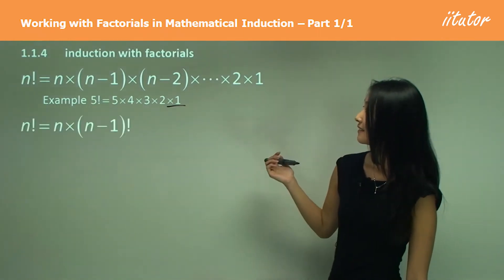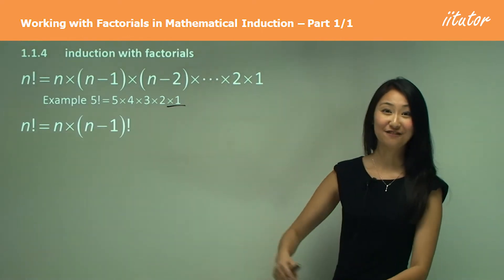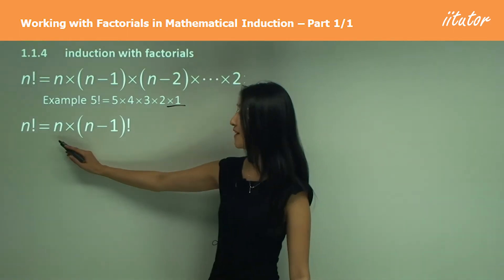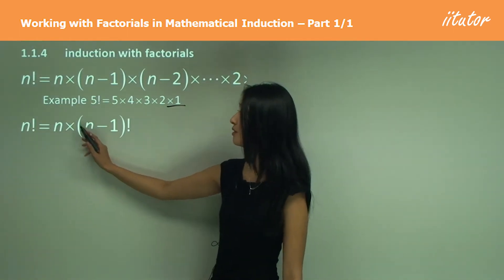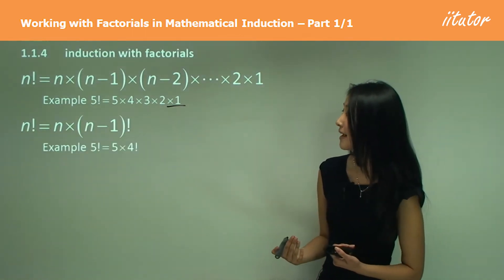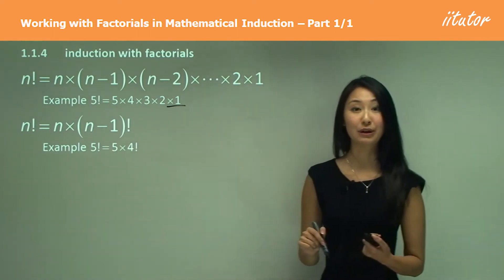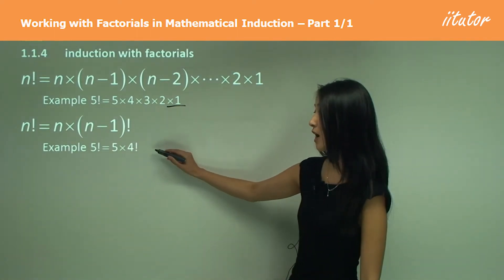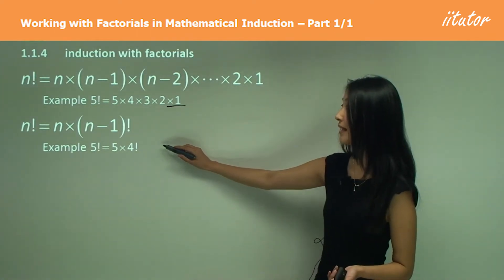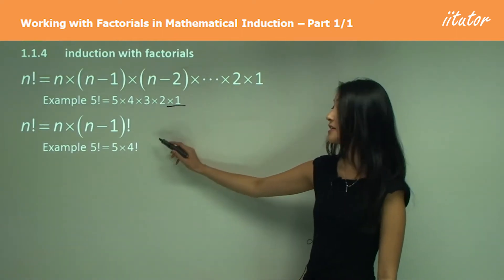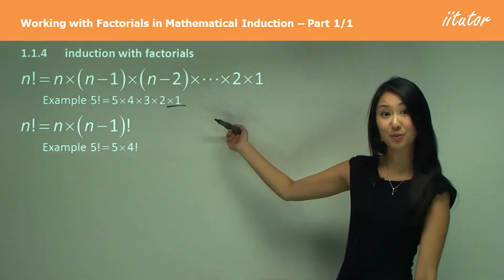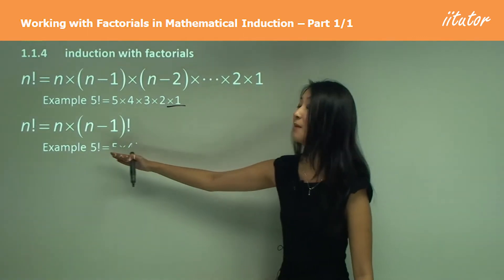Now this over here is very important for what we use in the induction process. We have that N factorial equals N times (N−1) factorial. What does that mean? Well, 5 factorial is actually the same as saying 5 times 4 factorial, and that makes sense because 4 factorial is 4 times 3 times 2 times 1. So if I put a 5 in front of that, it becomes 5 times 4 times 3 times 2 times 1, which is 5 factorial.